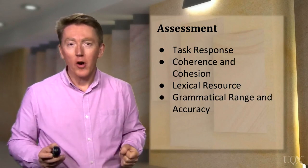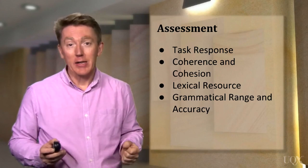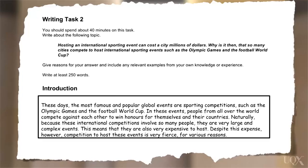Now that you know what criteria is used, let's take a quick look at an example essay. We can see from the question that we're looking at an essay about why countries host large sporting events, like the Olympics, even though they're very expensive. In this essay, you're required to give reasons and explanations. Below that, we can see a sample introduction response to this question.